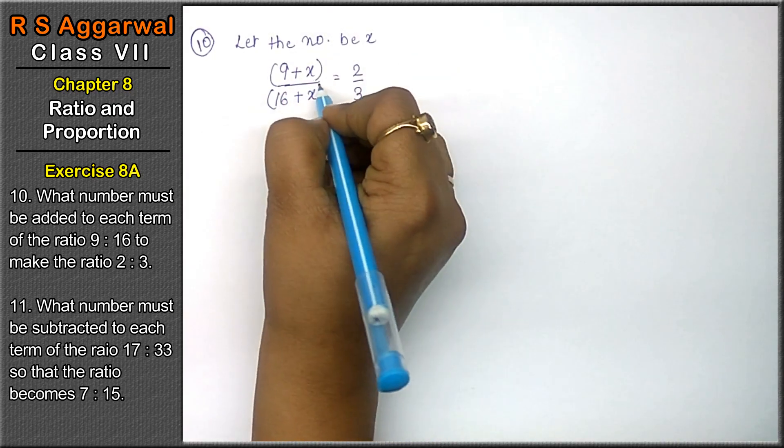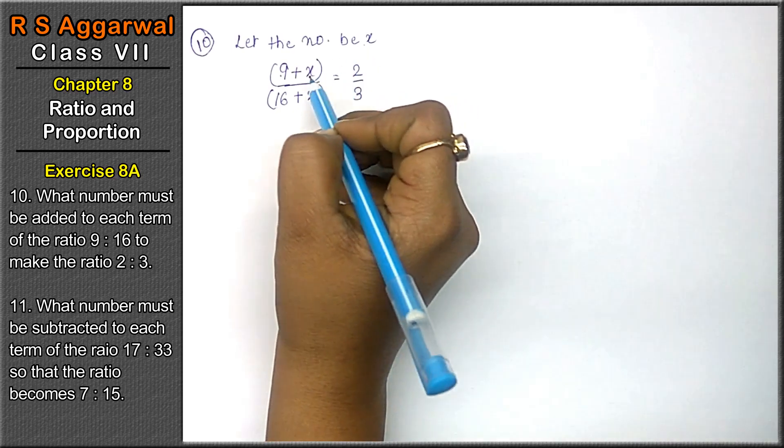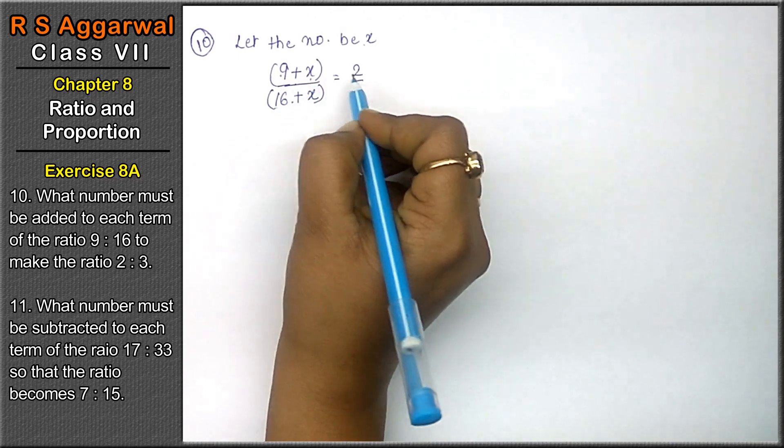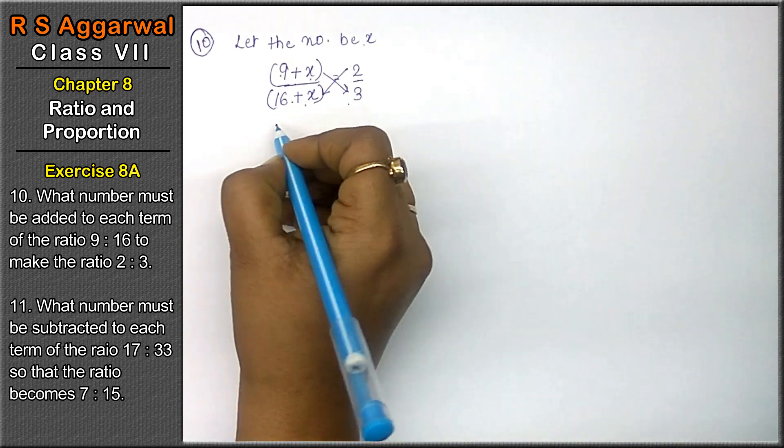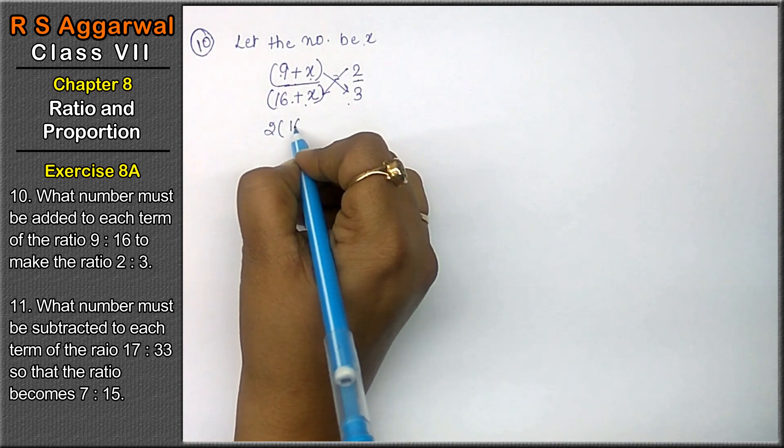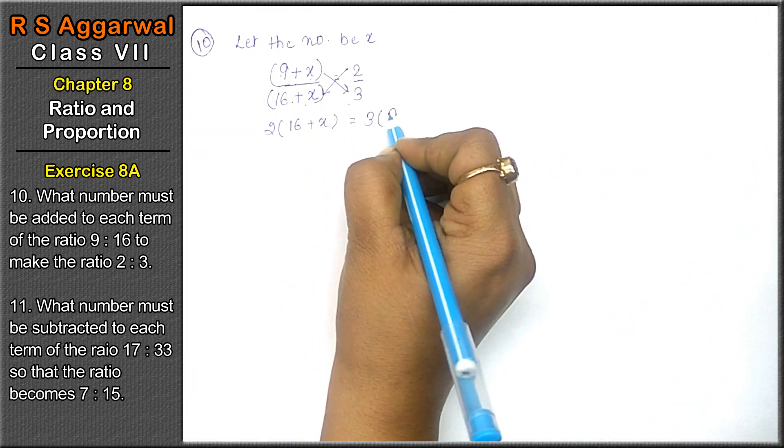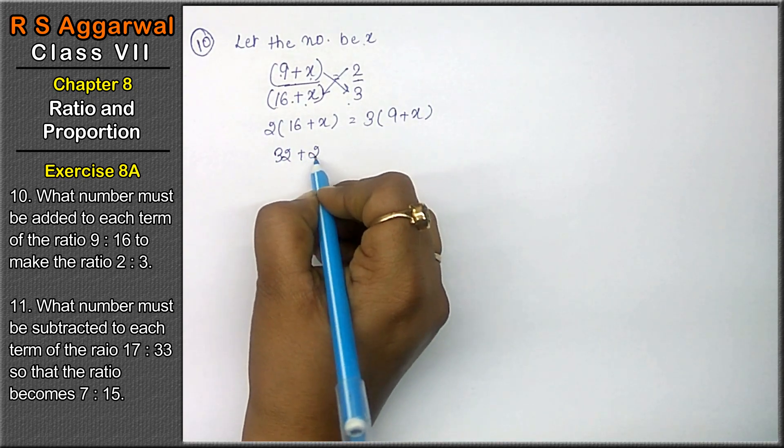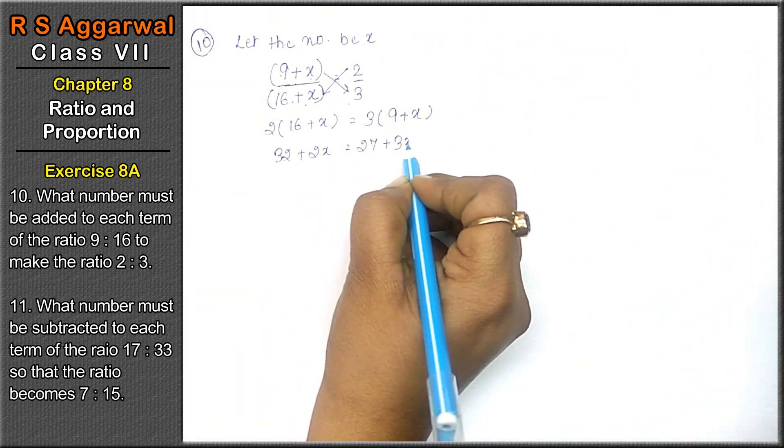the ratio is 9 upon 16. Which number should be added? If x is added, the ratio becomes 2 upon 3. When this situation comes, we cross multiply. That means 2 multiplied by 16 plus x, and 3 multiplied by 9 plus x. This becomes 32 plus 2x equals to 27 plus 3x.